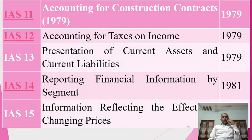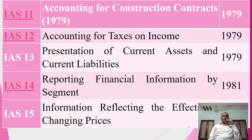IAS 11 is on accounting for construction contracts, established in 1979. IAS 12 covers accounting for taxes on income — policies and guidelines for how income is taxed — established in 1979. IAS 13 is on presentation of current assets and current liabilities, with related guidelines established in 1979.